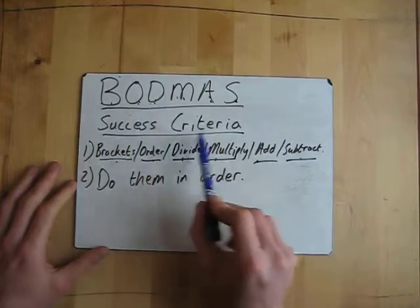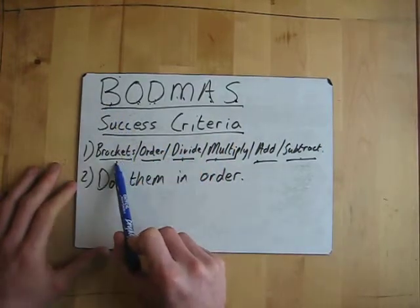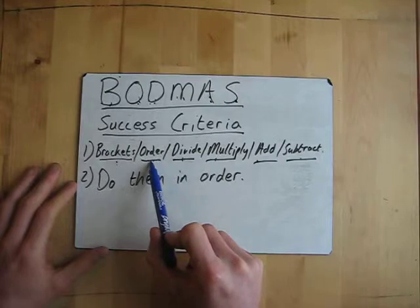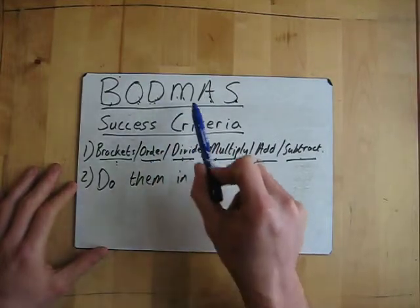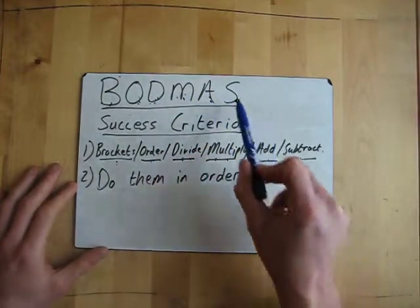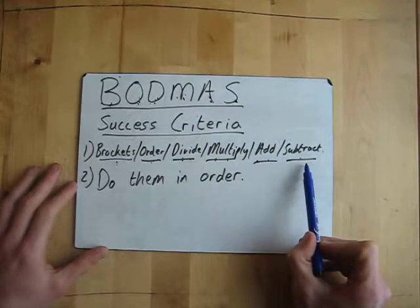So BODMAS, the success criteria for it is: B stands for brackets, O stands for order, D stands for divide, M stands for multiply, A stands for add, and S stands for subtract.